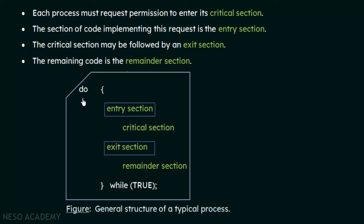Here is a glimpse of a typical process code structure. Inside a do-while loop, we have the entry section — which implements the request of the process to enter its critical section — followed by the critical section itself. Then we have the exit section, which follows after the process completes execution in the critical section. The remaining portion of the code is known as the remainder section.